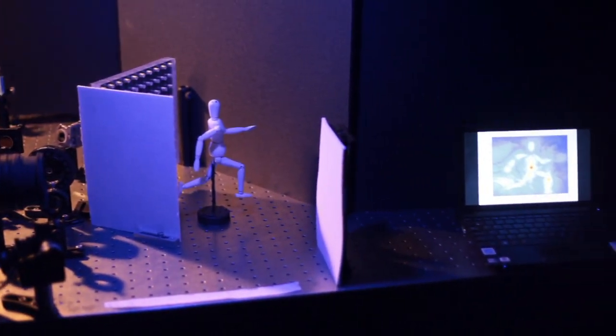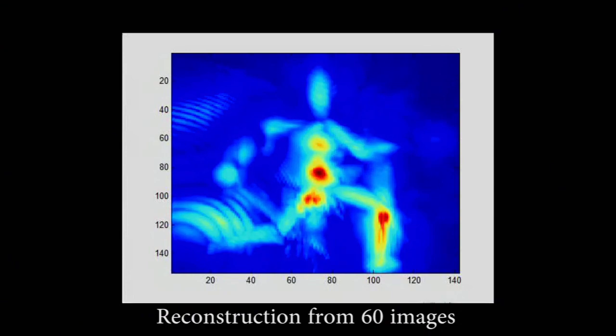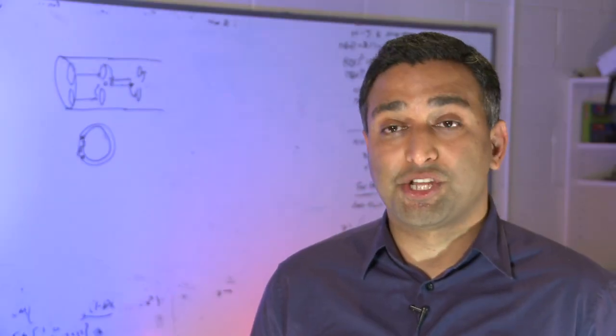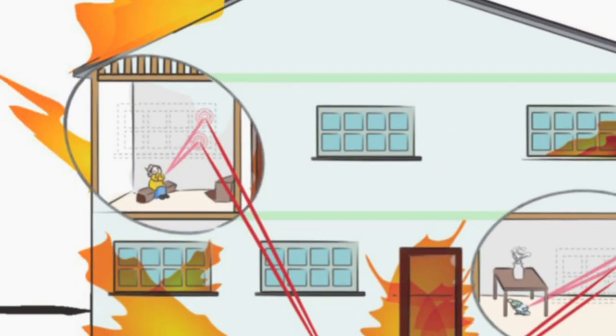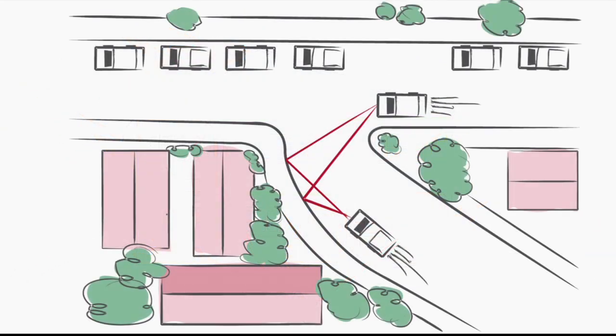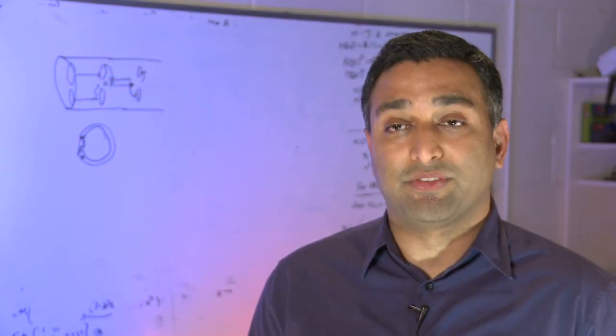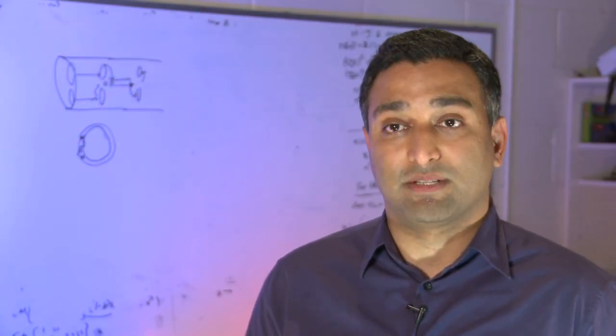This ability to look around a corner without any mirrors has many possible applications. With non-line of sight imaging, we can help rescue and planning in hazardous conditions. We can help cars before they take a turn to avoid any collision and we can create endoscopes that can reach deep inside our body in tight spaces and look around obstacles.